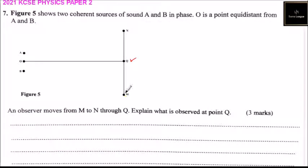When the observer moves from M to Q, he or she will observe alternate loud sound. We will experience alternate loud, or what we call constructive interference, and also soft, or what we call destructive interference sound.